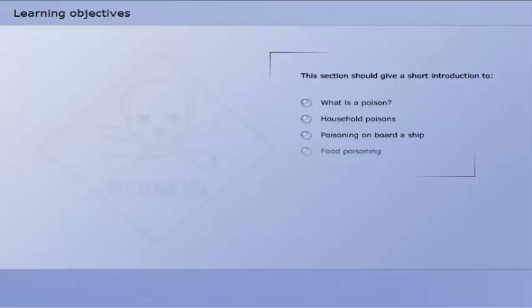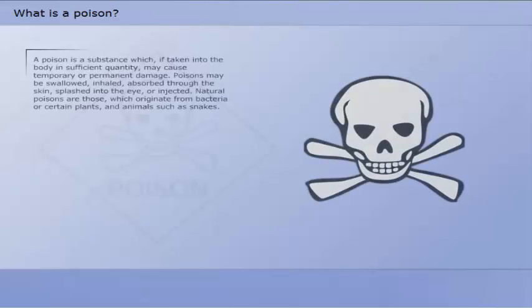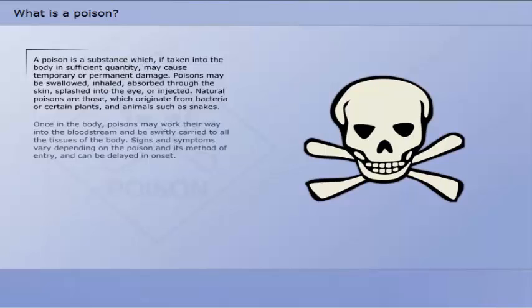What is a poison? Household poisons, poisoning on board a ship, and food poisoning. A poison is a substance which, if taken into the body in sufficient quantity, may cause temporary or permanent damage. Poisons may be swallowed, inhaled, absorbed through the skin, splashed into the eye, or injected. Natural poisons — toxins — are those which originate from bacteria or certain plants and animals, such as snakes.